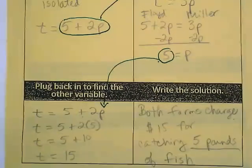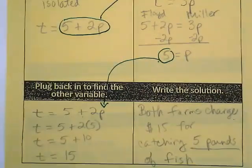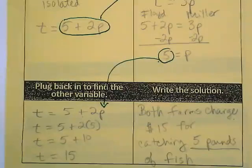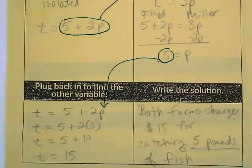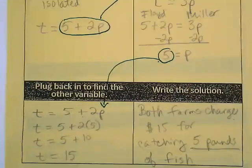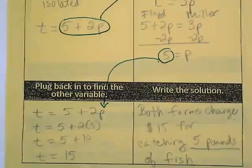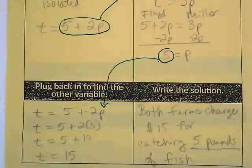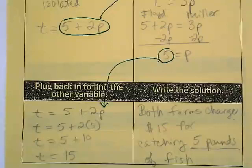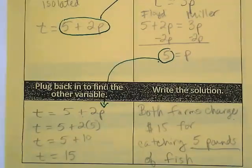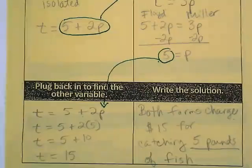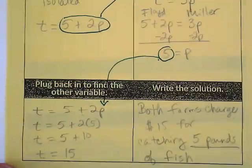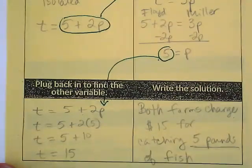If I was going to catch less than 5 pounds, which farm should I go to? Miller would be cheaper unless I get up to 5 pounds. Once I pass 5 pounds, actually, Floyd's becomes cheaper. But we didn't figure that out. What we figured out was the question, when is the charge the same? The charge is the same when you catch 5 pounds of fish at either farm. You're going to pay $15 for 5 pounds. Are we less scared of systems word problems now?